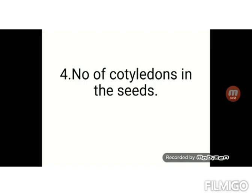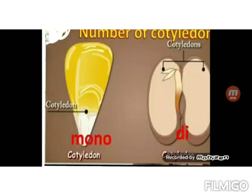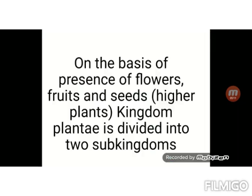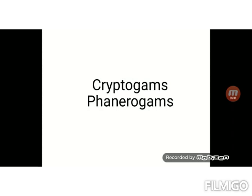The fourth criteria is the number of cotyledons in the seeds. Seeds have cotyledons, and the number of cotyledons is taken into consideration to classify the plants. The higher level of plants are again classified into two sub-kingdoms: cryptogames and phanerogames, depending on the absence or presence of flowers, fruits, and seeds. About cryptogames and phanerogames, we will study in the next class.